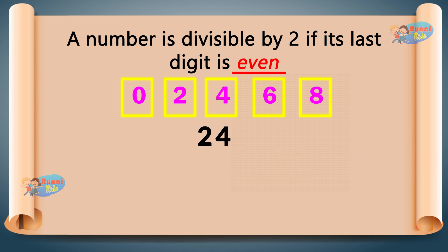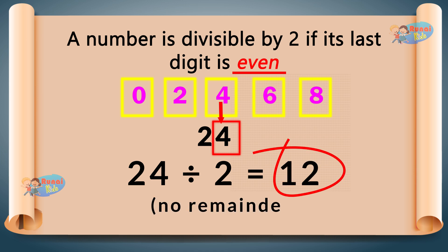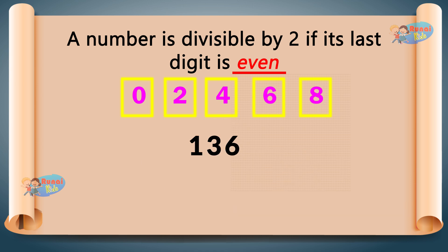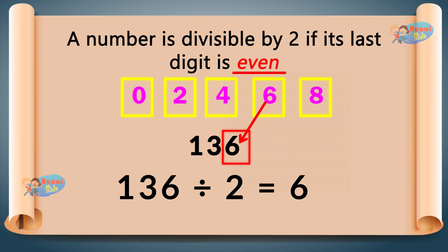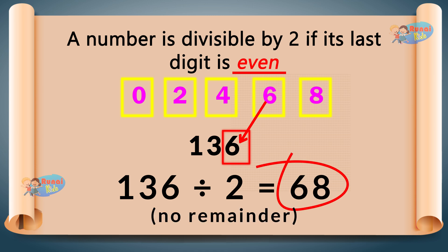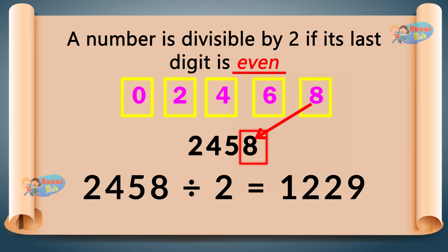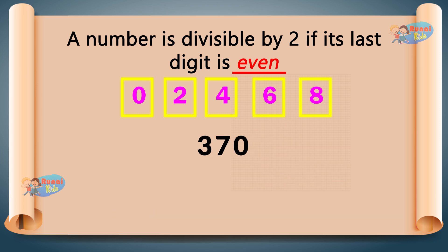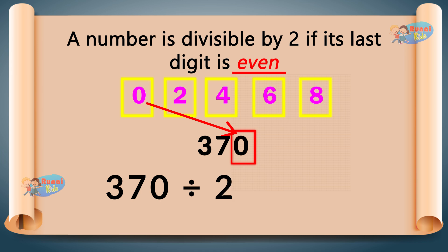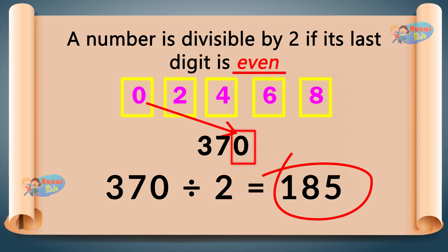Examples: 24 — last digit is 4, even number, so 24 divided by 2 equals 12, no remainder. 136 — last digit is 6, even number, so 136 divided by 2 is 68, no remainder. 2458 — last digit is 8, even number, so 2458 divided by 2 equals 1229, no remainder. 370 — last digit is 0, even number, so 370 divided by 2 equals 185, no remainder.